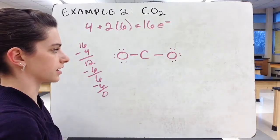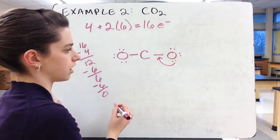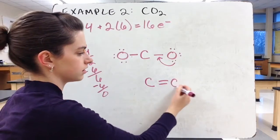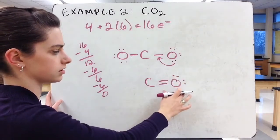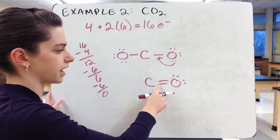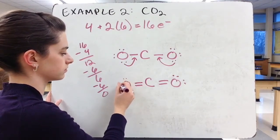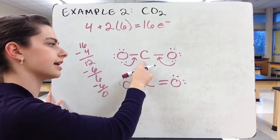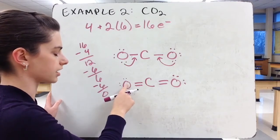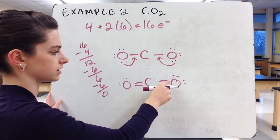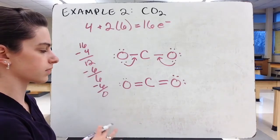Both oxygens have 8 valence electrons, but carbon only has 4 — it needs 4 more. So a lone pair from one oxygen becomes a second bond with carbon, forming a double bond on that side. Then we do the same on the other side, turning another lone pair into a second bond. Now each oxygen has 2 lone pairs and a double bond, giving 8 electrons total. Carbon now has 4 bonds for 8 electrons total. Everyone has 8 valence electrons, and all 16 electrons are accounted for.